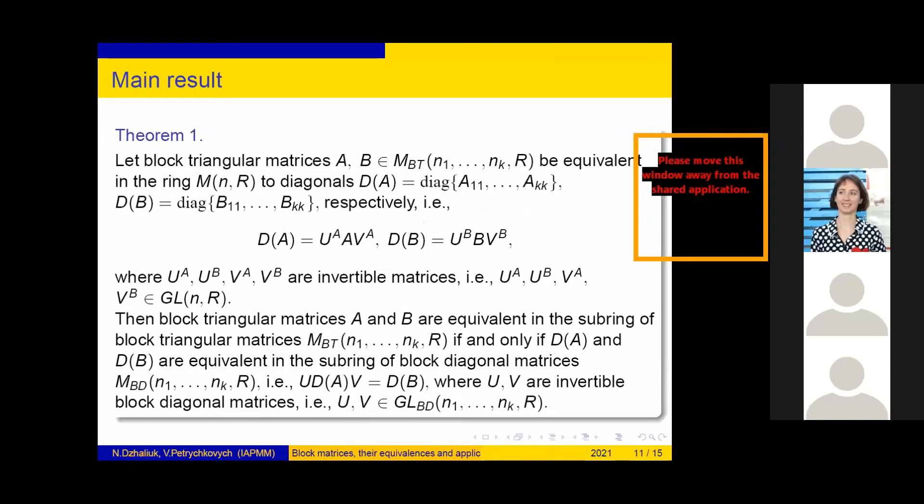Our first result is Theorem 1. Let block triangular matrices A and B be equivalent in the ring M_n(R) to diagonals D(A) and D(B) respectively. That is D(A) = U^A A V^A, D(B) = U^B B V^B, where U and V are invertible matrices. Then block triangular matrices A and B are equivalent in the subring of block diagonal matrices M_BD if and only if D(A) and D(B) are equivalent in the subring of block diagonal matrices.